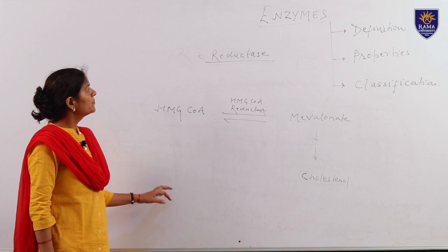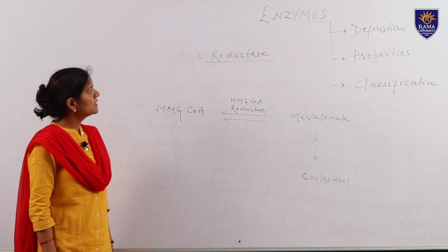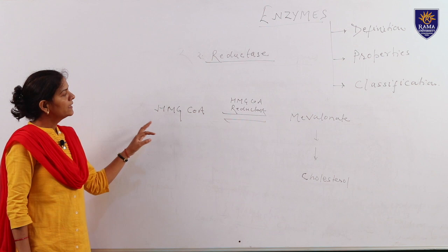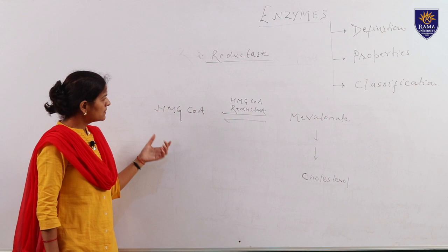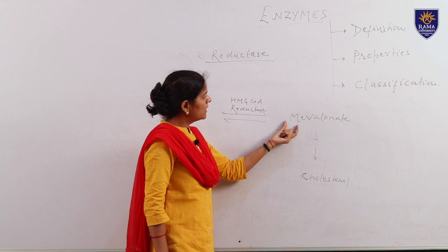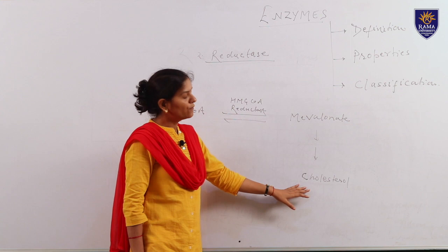The next subclass of oxidoreductase is the reductase enzyme, which catalyzes reduction reactions. Here I have shown the example of a reductase enzyme, which is actually an intermediate step of the biosynthesis of cholesterol. In this step, HMG-CoA undergoes a reduction reaction in the presence of the enzyme HMG-CoA reductase to give an intermediate product called mevalonate, which further through various reactions helps in the synthesis of cholesterol.